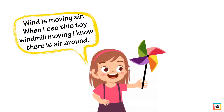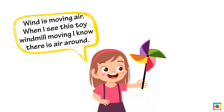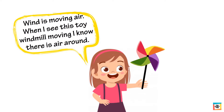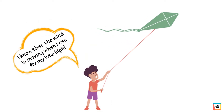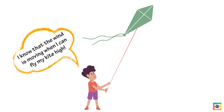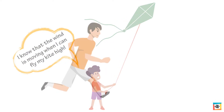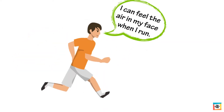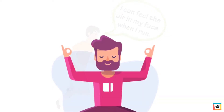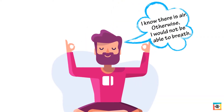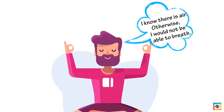Wind is moving air. When I see this toy windmill moving, I know there is air around. I know that the wind is moving when I can fly my kite high. I can feel the air on my face when I run. I know there is air — otherwise, I would not be able to breathe.